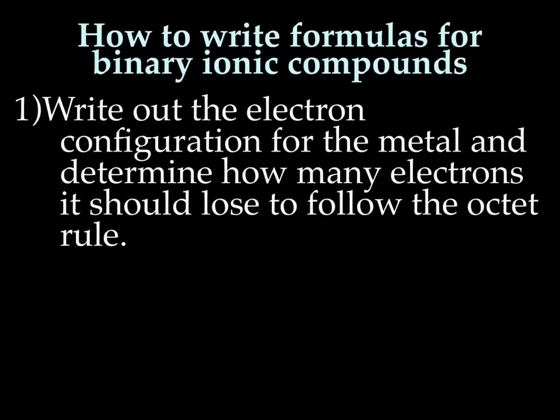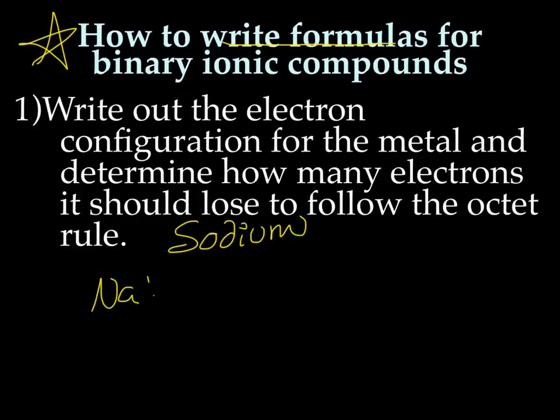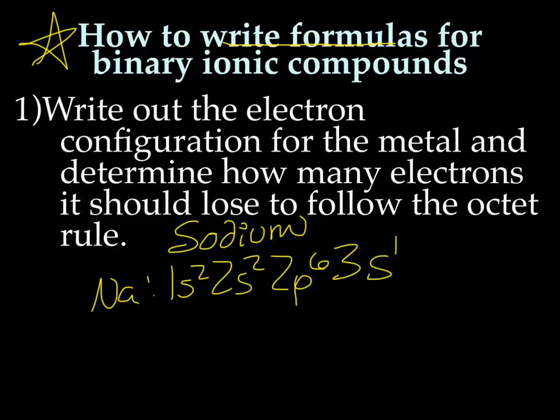This is it. We are going to learn how to write formulas for binary ionic compounds. This is the important part of the lecture here. So the first thing you want to do is write out the electron configuration for the metal and determine how many electrons it should lose to follow the octet rule. So let's say our metal is sodium. Sodium has an electron configuration of 1s2, 2s2, 2p6, 3s1. So he's a metal, so he's going to be losing electrons. He's going to lose those two. So sodium is going to be Na1+.